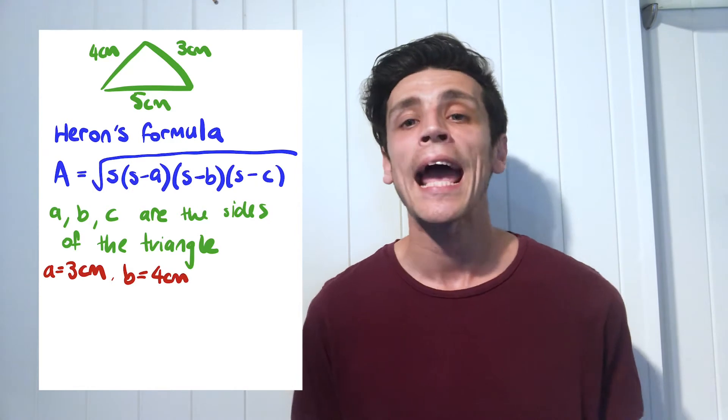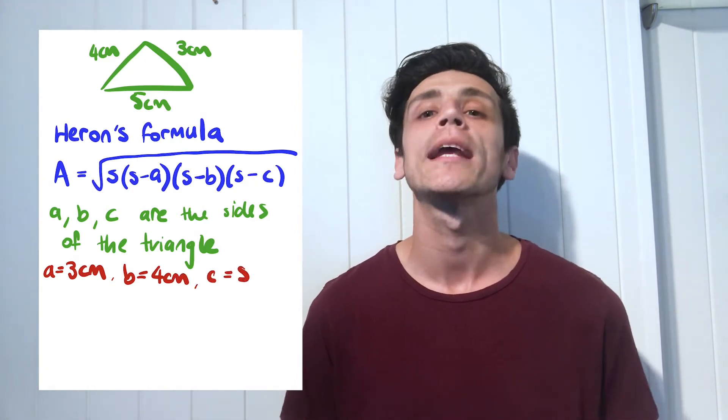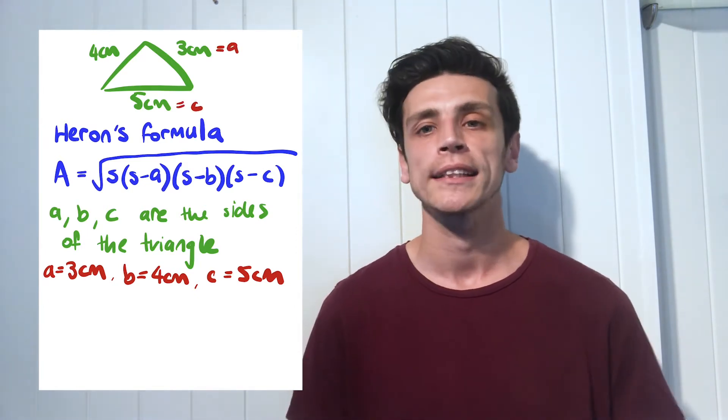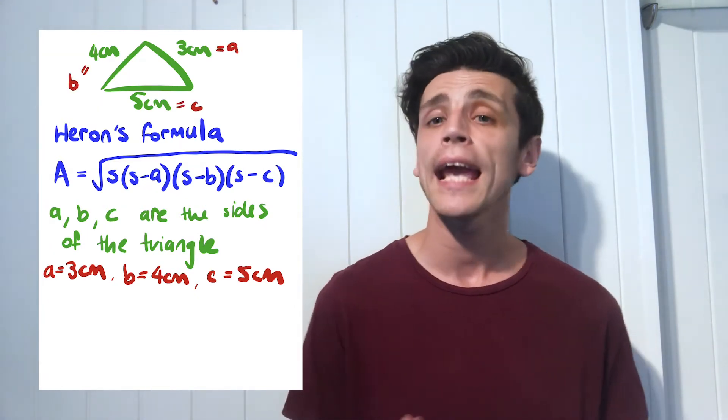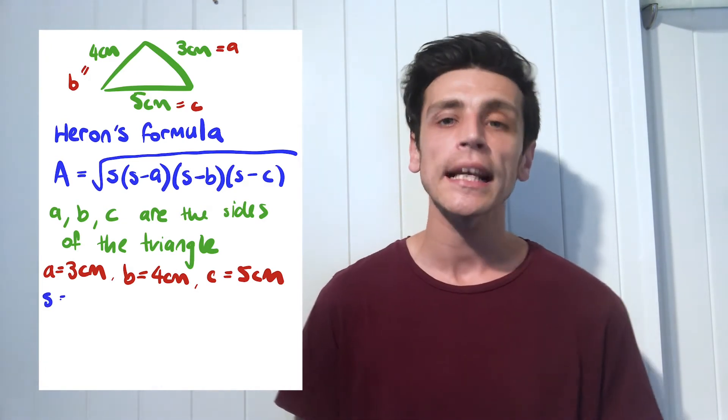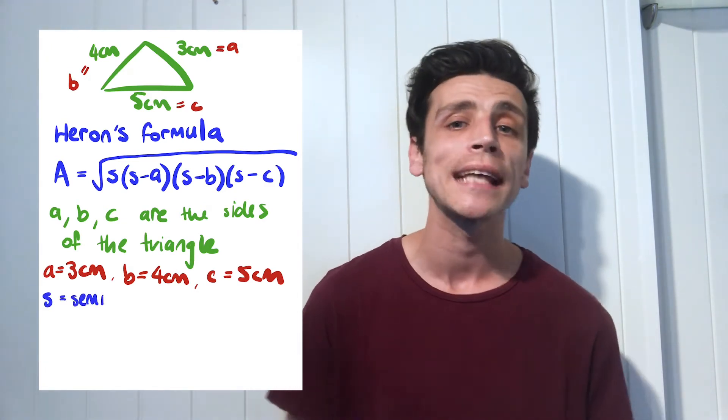So we can make A for example three centimeters, we can make B four centimeters, and we can make C five centimeters. So these are our sides. So once we worked out S we can then finish off our formula. S actually refers to what's called the semi perimeter.